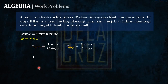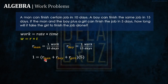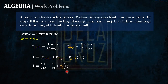One work is equal to the sum of the rates of the three workers times the time, since they are all working together from the start. This is just the sum of the individual works: work of the man plus work of the boy plus work of the girl. If we distribute the time and substitute, let's say the rate of the girl is Rg.